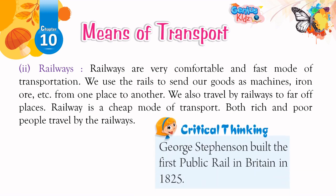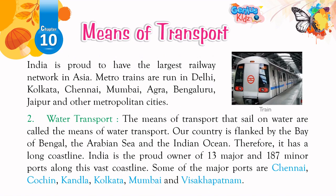Critical Thinking: George Stephenson built the first public rail in Britain in 1825. India is proud to have the largest railway network in Asia. Metro trains are run in Delhi, Kolkata, Chennai, Mumbai, Agra, Bengaluru, Jaipur, and other metropolitan cities.